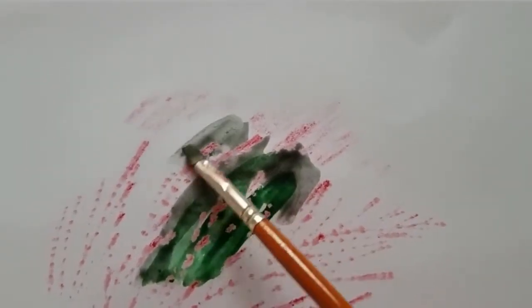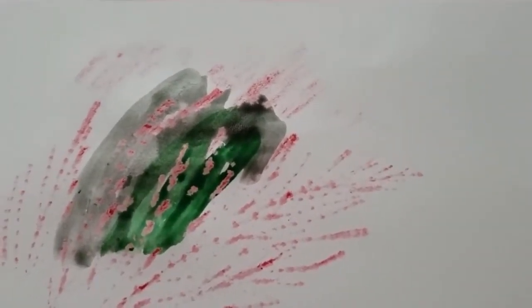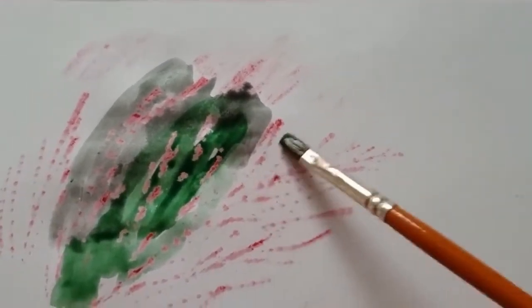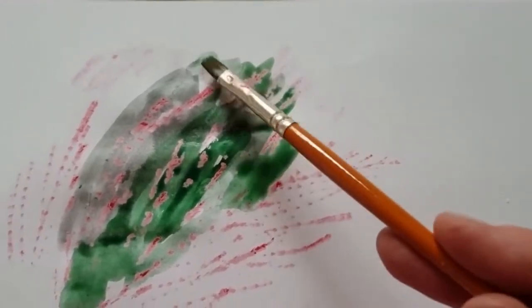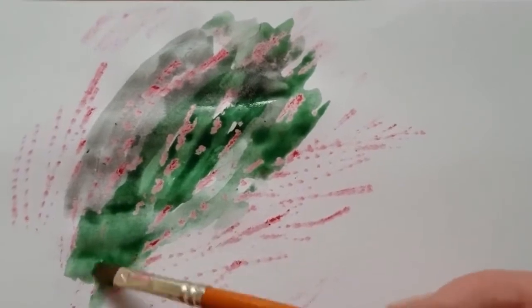Again, you need to be careful not to go over and over it because otherwise the paint will obliterate the pattern that you've rubbed. Just be gentle and just put very wet paint over the top of it. And then once you've done that and you've got your texture through, leave it to dry and then you can cut it out to be your little rock or stone.